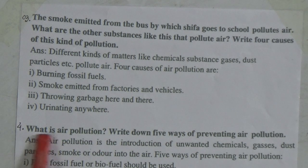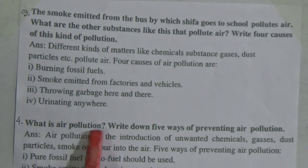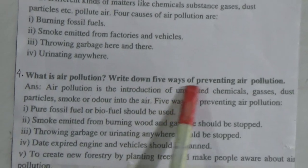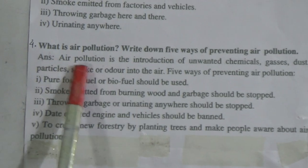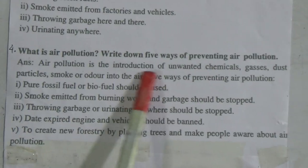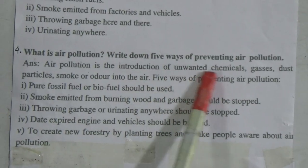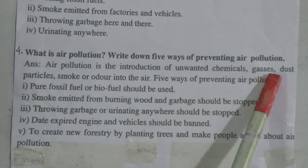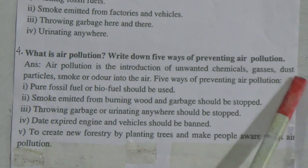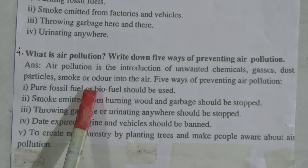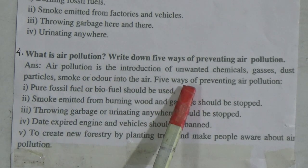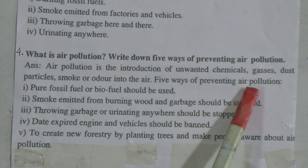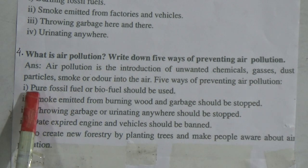Question number four: What is air pollution? Write down five ways of preventing air pollution. The answer is: air pollution is the introduction of unwanted chemicals, gases, dust particles, smoke, or odor into the air.